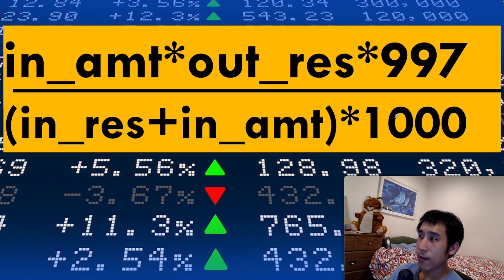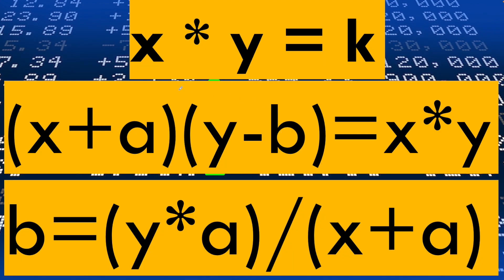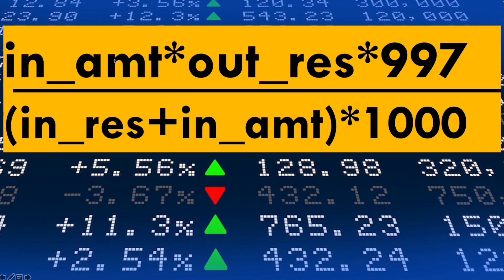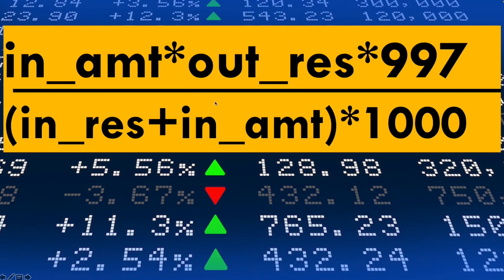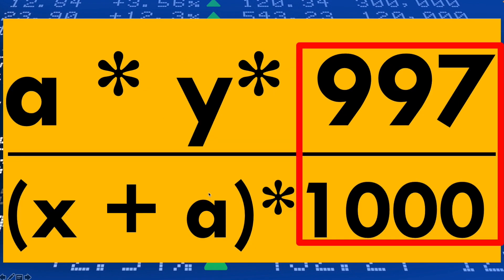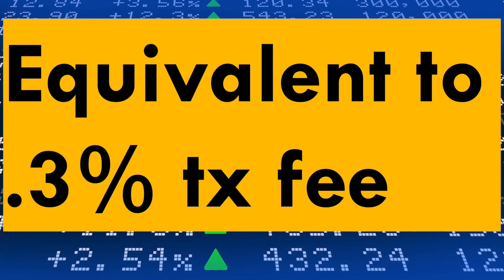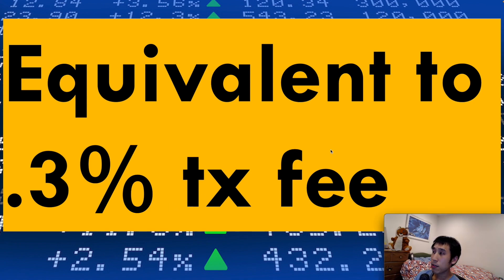To put it more simply: input amount times 997 times output reserve, over input reserve times 1000 plus input amount times 997. If we replace input amount with variable A, output reserve with Y, and input reserve with X, the equation reduces to B times 997 over 1000. This means that instead of getting back the full number of token B's, we receive that number minus a 0.3% transaction fee — we first calculate B using the constant product, then subtract the transaction fee.